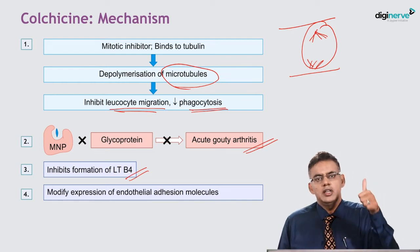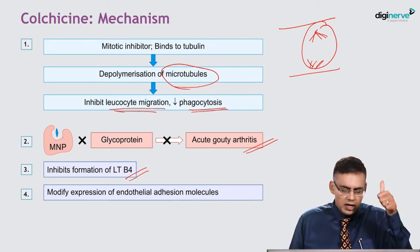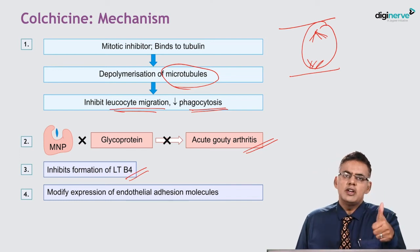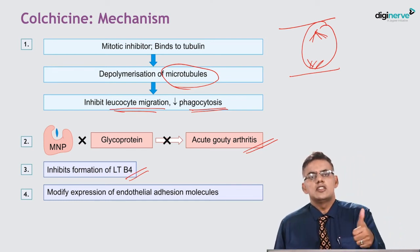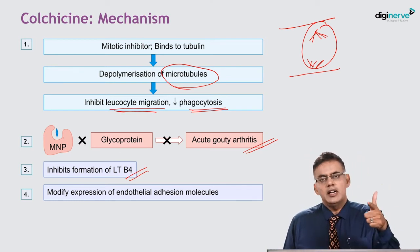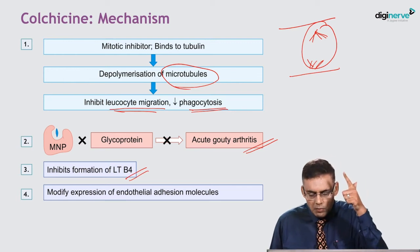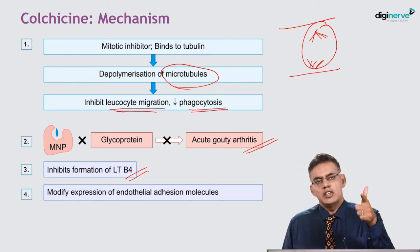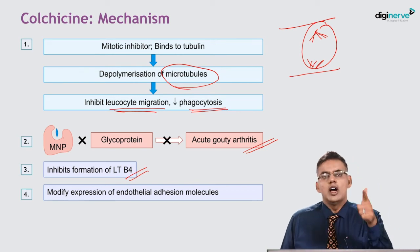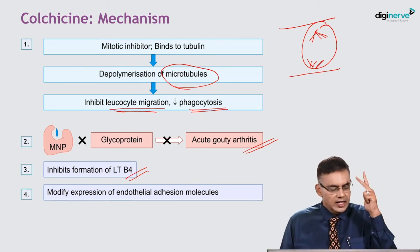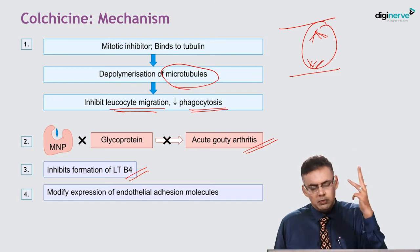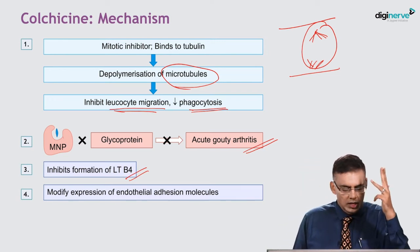To summarize colchicine's mechanisms: (1) it is a mitotic inhibitor that binds tubulin, causes depolymerization of microtubules, and inhibits leukocyte migration and phagocytosis; (2) it inhibits mononuclear phagocytes and glycoprotein release, decreasing acute gouty arthritis; (3) it inhibits leukotriene B4 formation; and (4) it modifies the expression of endothelial adhesion molecules.